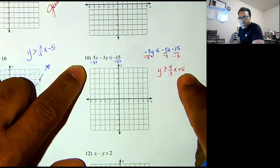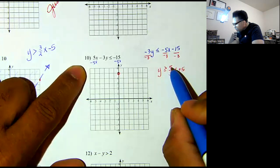My y-intercept is a positive 5, and my rise over run is rise 5, run 3.